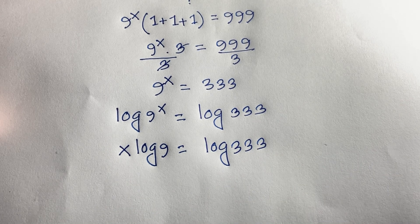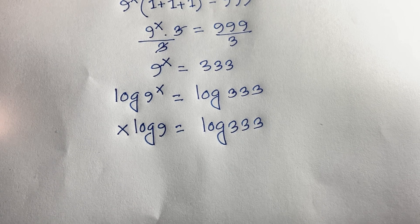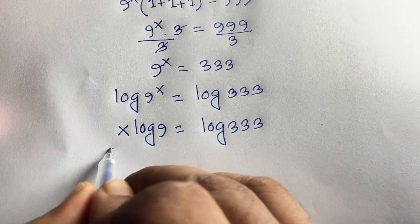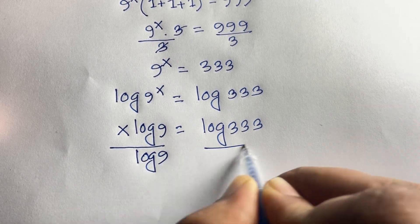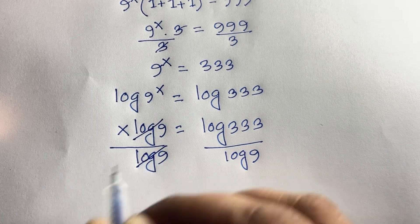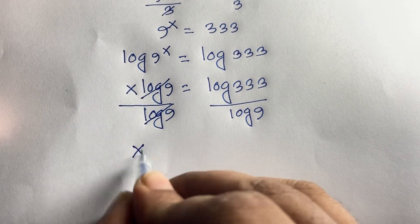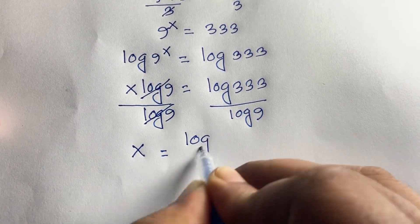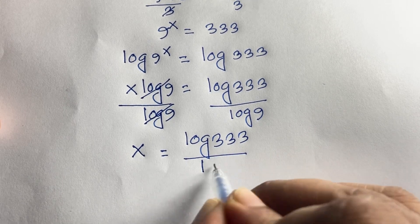What is the value of x in this exponential equation? If I divide both sides by log 9, then log 9 cancels on the left side, and we find that x is equal to log 333 over log 9.